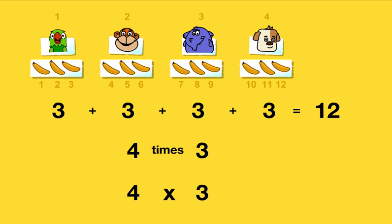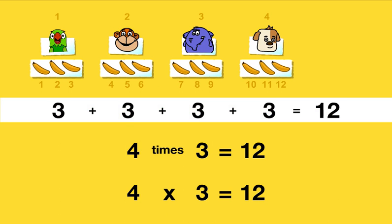This also equals twelve. So we see that three plus three plus three plus three is the same as four times three.